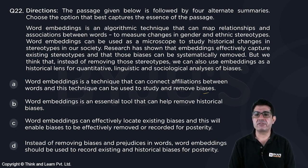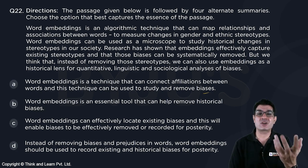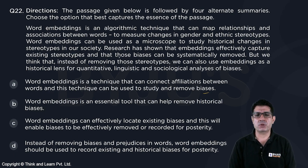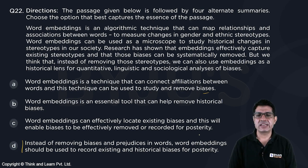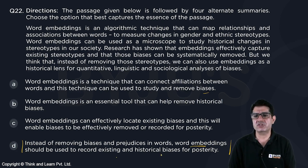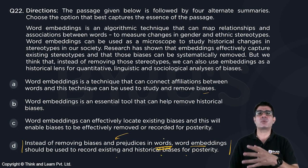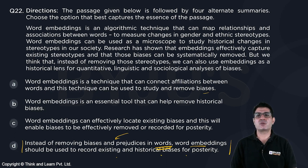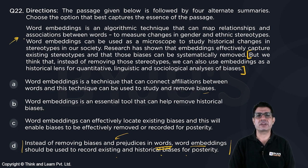C says word embeddings can effectively locate existing biases — but you don't use them to locate biases; you use them as a clue. So C has that problem. D, on the other hand, carries the last idea and implies the first idea, because word embeddings should be used to record existing historical biases. Instead of removing biases and prejudices in words — that basically tells you that words do have those biases.